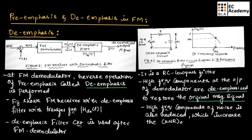Figure 4 shows the de-emphasis filter circuit diagram and its frequency response. Again, the de-emphasis circuit is a simple RC network. The frequency response shows that the de-emphasis circuit acts as a low-pass filter, which means the high-frequency components at the output of the demodulator are de-emphasized to restore the original message signal.